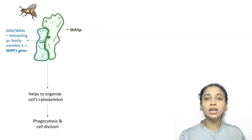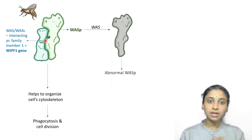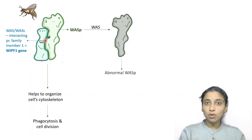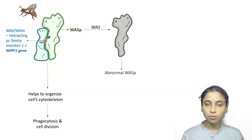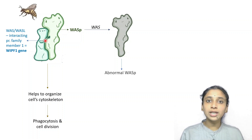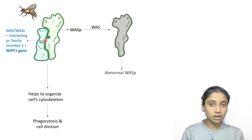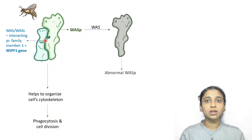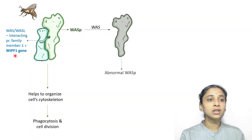In Wiskott-Aldrich syndrome, the WASP protein will not be formed properly — there will be an abnormally formed WASP protein which affects all the above-mentioned activities. Wiskott-Aldrich syndrome is an X-linked recessive disorder, so males are more affected, but spontaneous mutations can also occur. If the spontaneous mutations are small, we call it X-linked thrombocytopenia. If they are larger, it can result in abnormally formed or absent protein, resulting in Wiskott-Aldrich syndrome. There is also Wiskott-Aldrich syndrome type 2, which occurs due to mutation in the WIPF1 gene.